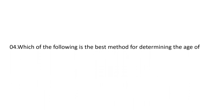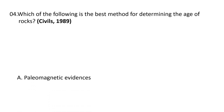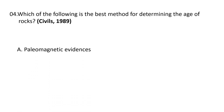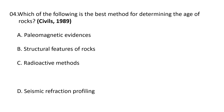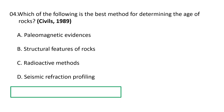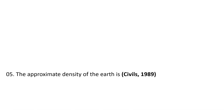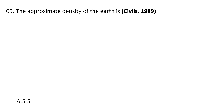Next question: Which of the following is the best method for determining the age of rocks? A) Paleomagnetic evidences, B) structural features of the rocks, C) radioactive methods, D) seismic refraction profiling. The best method is the radioactive method, so C is the correct answer.